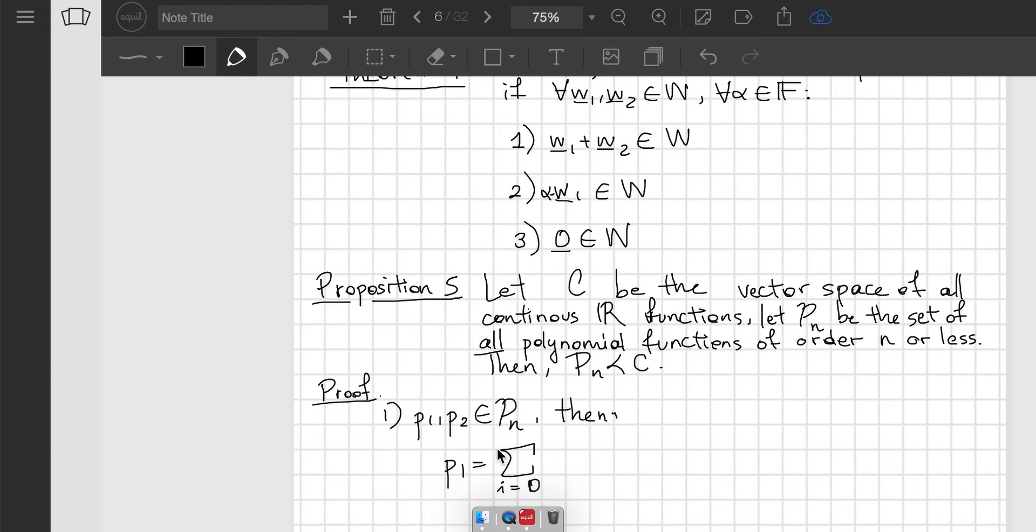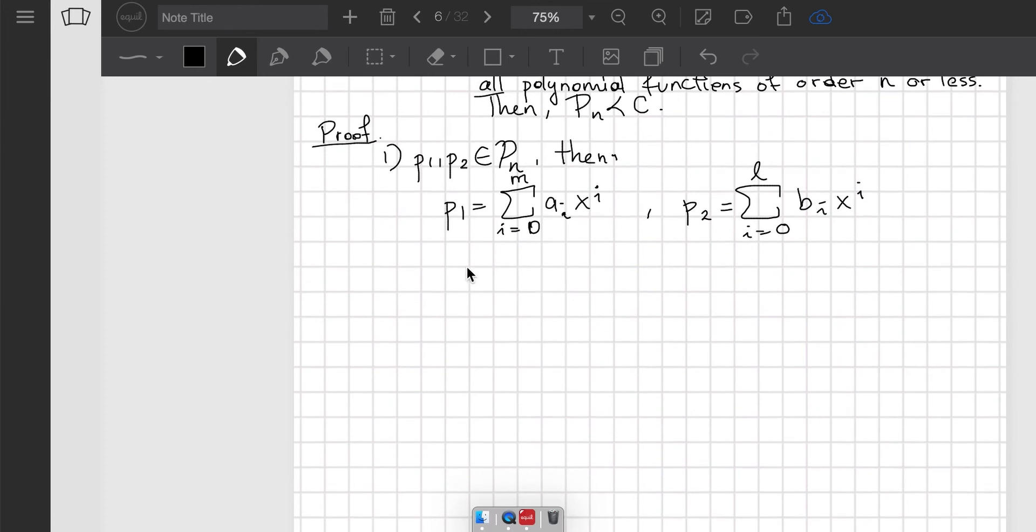Then I can write P1 as the summation from 0 to m of a_i x^i, whereas P2 I can write as the summation from 0 to l of b_i x^i. If I take the sum of the two, P1 plus P2, that is going to be summation from 0 to m of a_i x^i plus the second sum.